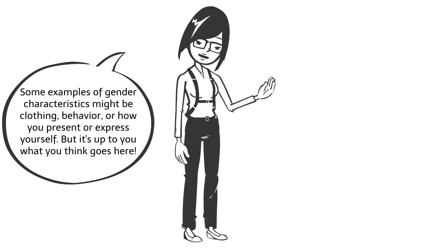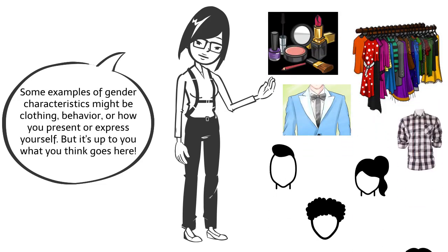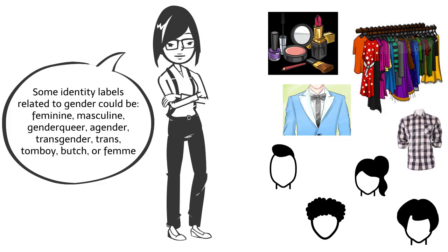Some examples of gender characteristics might be clothing, behavior, or how you present or express yourself. But it's up to you what you think goes here. Some identity labels related to gender could be feminine, masculine, or genderqueer, among others.